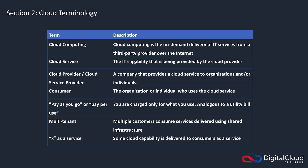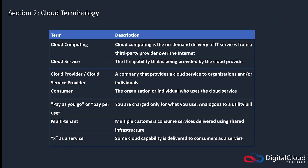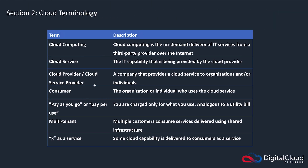The service is the capability being provided by the cloud provider. Going back to our examples, Gmail is an email service, Facebook is a social networking service, and Dropbox is a storage service. We then have the cloud provider and the consumer. The cloud provider is the company that offers the service, and the consumer is the individual or organization who is using the services provided by the cloud provider.